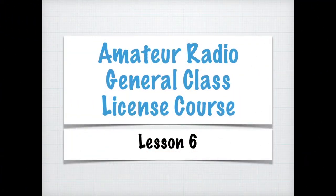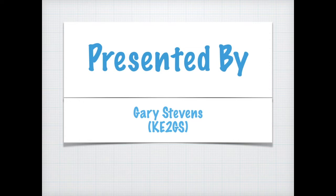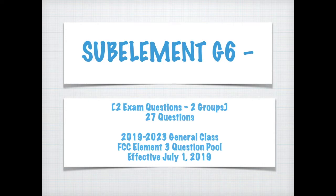This is the amateur radio general class license course, lesson six. I'll be your instructor, Gary Stevens, Kilo Echo II Gulf Sierra, KE2GS. This is sub-element G6. There's two exam questions out of two groups of 27 questions total. This covers the 2019 to 2023 general class FCC element three question pool, which was effective July 1st, 2019.